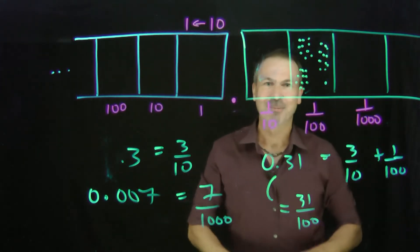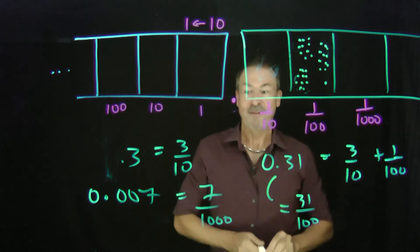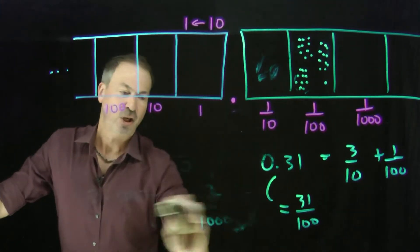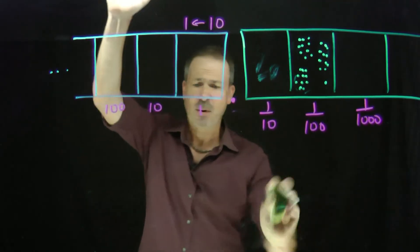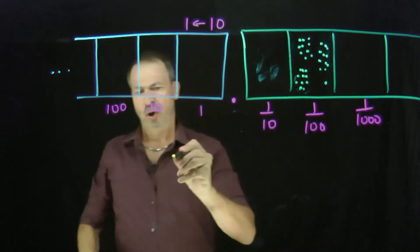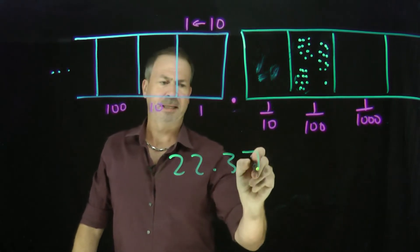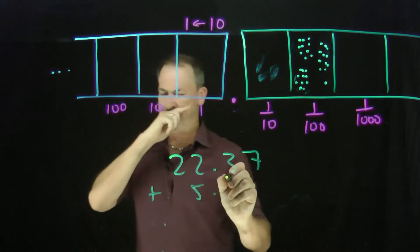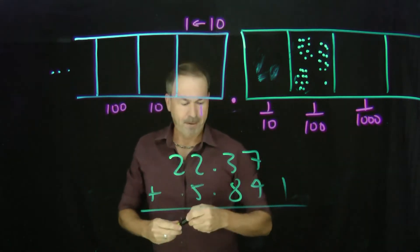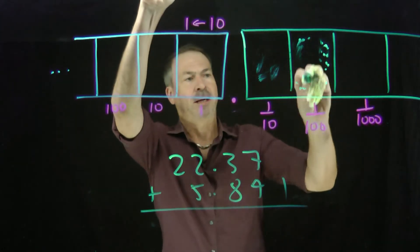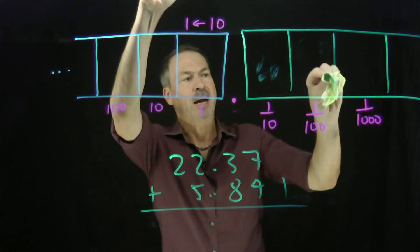Alright! So we're working with decimals. All is good! In fact, you can even do arithmetic with decimals, just like we were doing arithmetic before. Nothing is different. For example, if someone asked me to compute, say, twenty-two point three seven plus five point eight four one. Let's do that. Well, in my picture, I can see exactly what it's going to be.